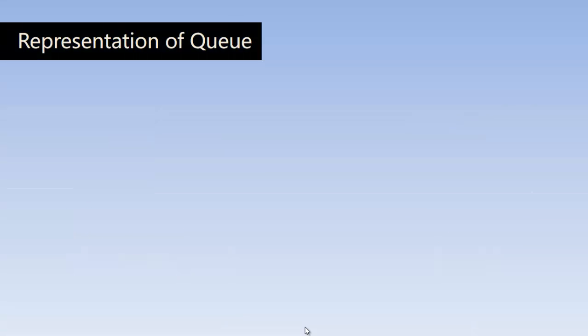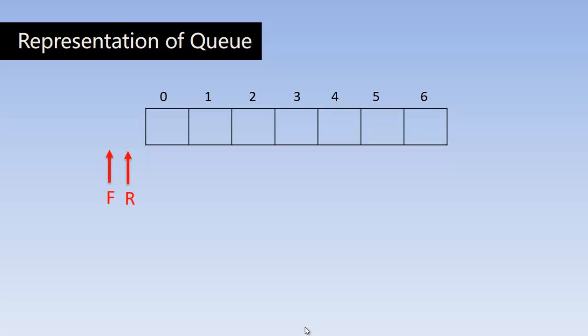Now let us understand the memory representation of queue. This has got seven locations, so we can input seven elements into it. Its index also starts from zero. And there are two major pointers in the context of queue. One is front, another one is rear. So front pointer always points to the front end of the queue, that is the first element in the queue. And rear pointer always points to the rear end of the queue, that is the last element in the queue.